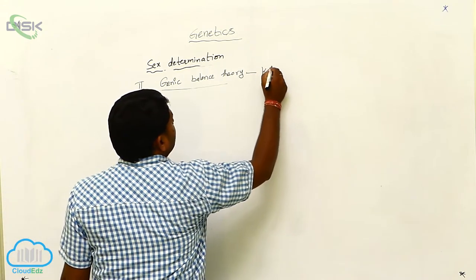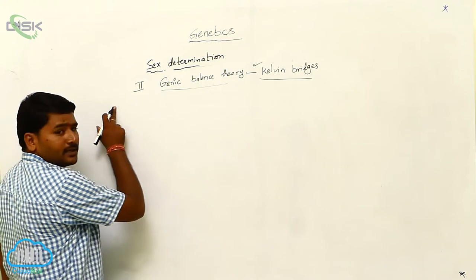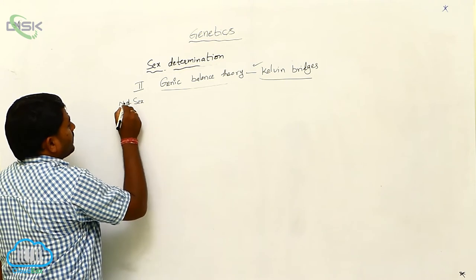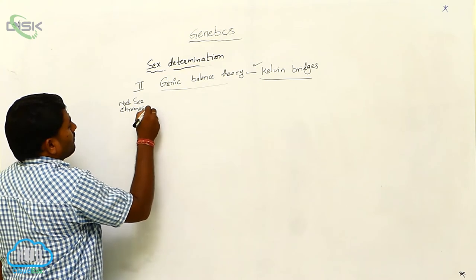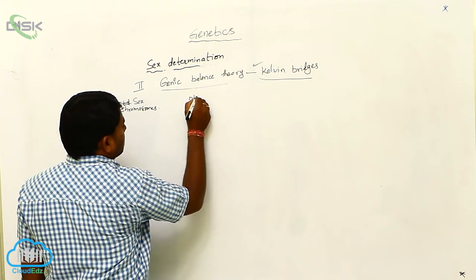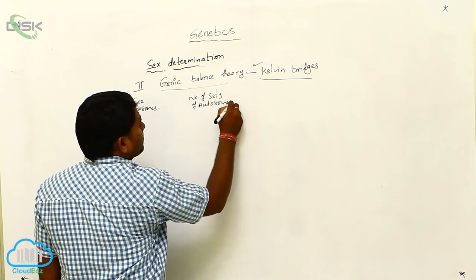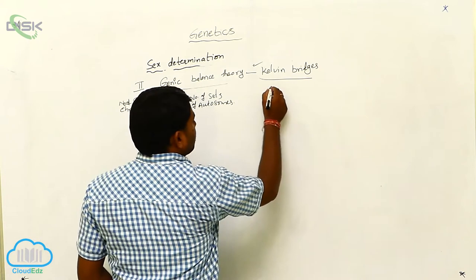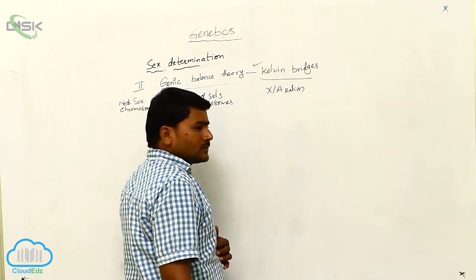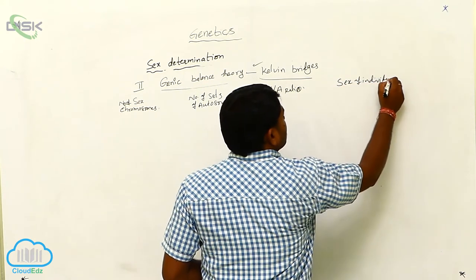Genic balance theory was explained by Calvin Bridges. The table has: number of sex chromosomes, number of sets of autosomes, X by A ratio, and sex of individual.